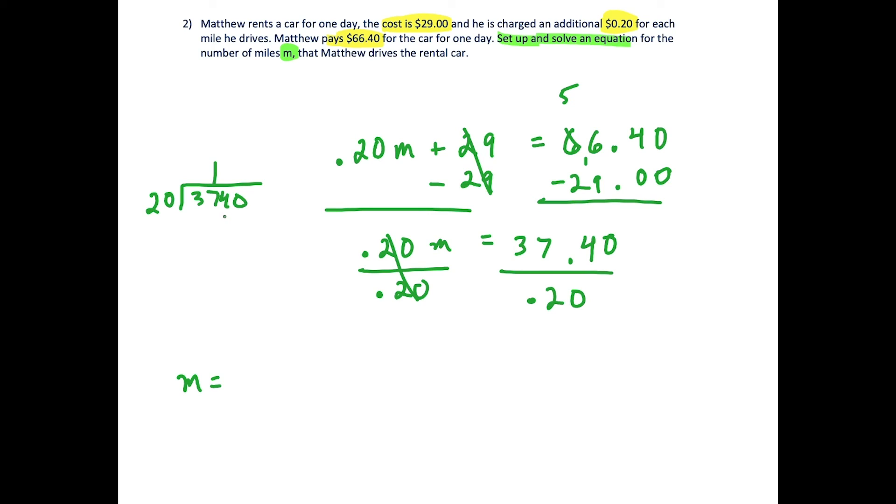20 goes into 37 once with a remainder of 17. 20 goes into 174 eight times, bringing you to 160. 20 goes into 140 seven times. Matthew drove 187 miles.